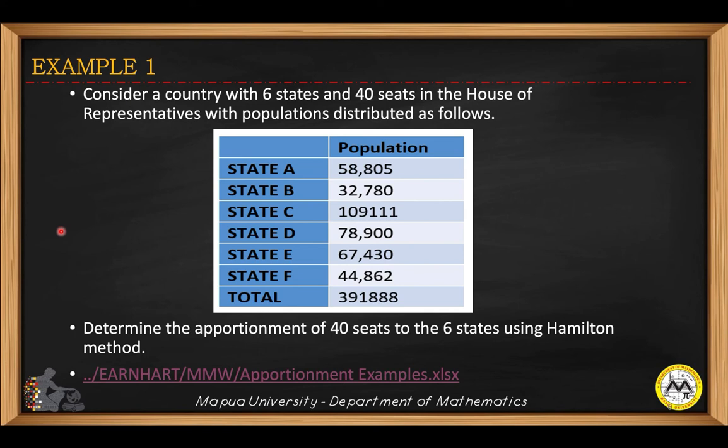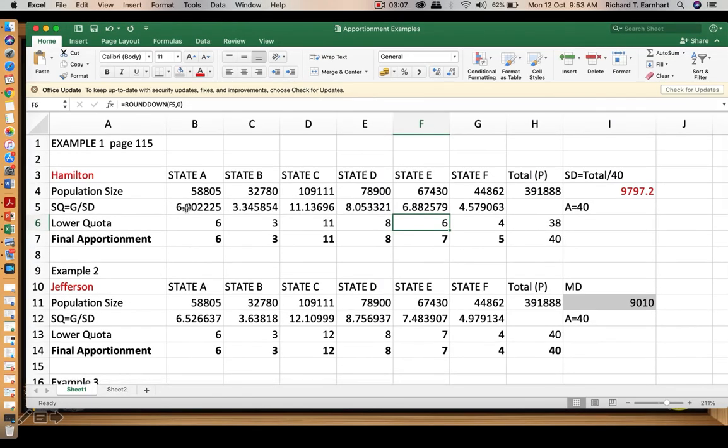Let's take this first example. Consider a country with six states and 40 in the House of Representatives with populations distributed as follows. We have state A to letter F, and then the corresponding population, and this is the total population. We determine the apportionment of 40 to be distributed among the six states using the Hamilton method. I'll be using Excel for my solution.